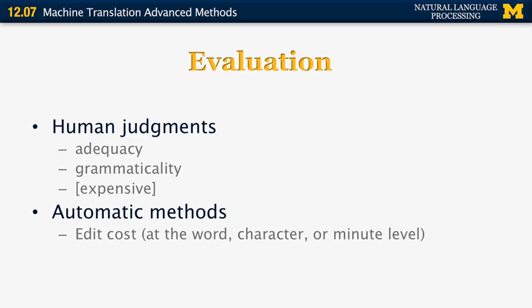There's another technique that is also relatively often used. It's called edit cost. And this is, for example, the number of edits that the human would need to perform on the translation, for example, by moving words around or characters around, or by counting the number of minutes that it takes to revise the translation to the correct translation. But I will focus mostly on BLEU.